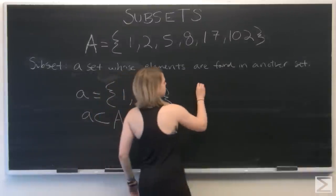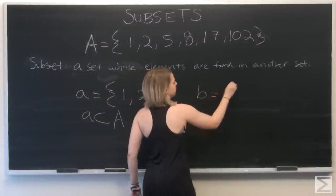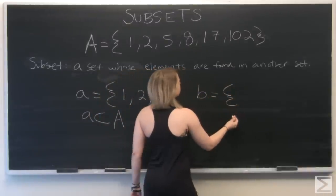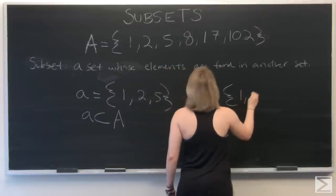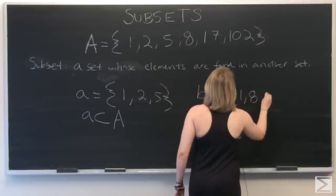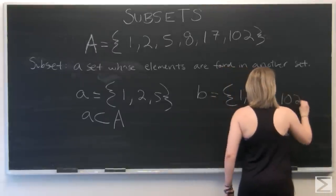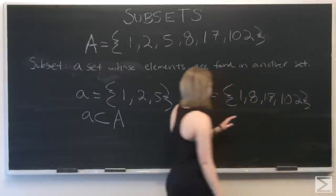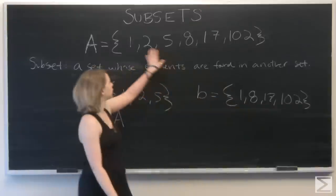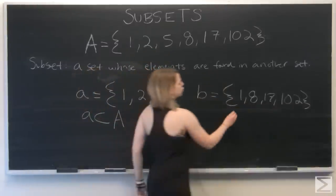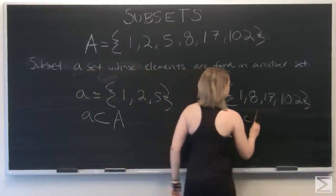Let's look at another one. We'll do B this time. B has elements 1, 8, 17, 102, and each of these elements can be found in set A. So B is a subset of A.